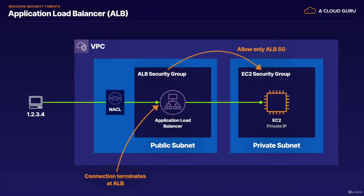This gets a little more complicated once you introduce an application load balancer into your environment. With an application load balancer, the incoming connection from your bad actor will terminate at the ALB itself. So your EC2 instance itself will be completely unaware of that origin IP. A host-based firewall would be ineffective in this case. One additional measure you could take is to allow only the ALB's security group access to the EC2 security group. However, this won't completely block traffic to the ALB originating from that bad actor, 1.2.3.4.